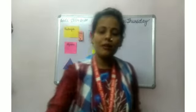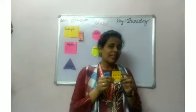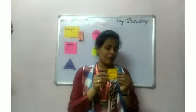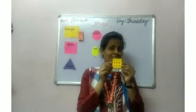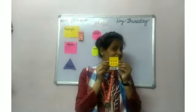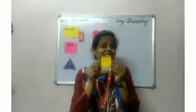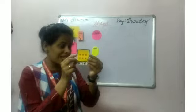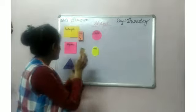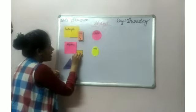Can you tell me what is this? This is dice. What is the shape of the dice? The shape of the dice is square.